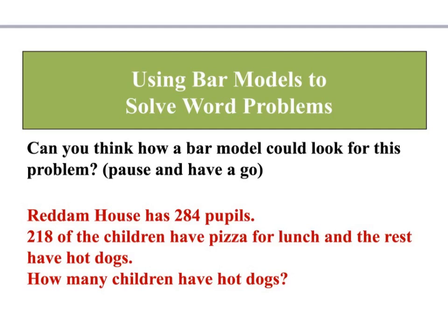We can also use bar models — and the main area we use bar models — is to solve problems. Looking at this problem, can you think of what bar model you could use to solve it? Pause, draw your bar model, and then we can talk through it afterwards. Redham House has 284 pupils — so there's an important number; I need to think, is that my whole number or is it a part? 218 of the children have pizza for lunch — another number — and the rest have hot dogs. How many children have hot dogs? Press pause and have a go yourself.